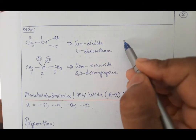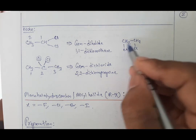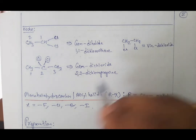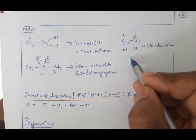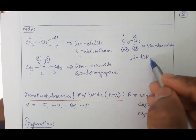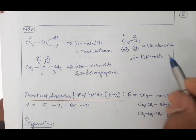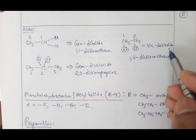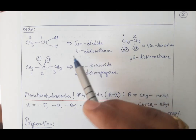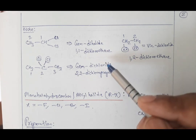For vicinal (weak) dichloride, the two halogens are on different carbons. For example, CH2Cl–CH2Cl: the two chlorines are on carbons 1 and 2 of a two-carbon chain. So in position 1, one chlorine is hanging, and in position 2, another chlorine is hanging — that gives 1,2-dichloro. With two carbons (eth-) and a single bond (-ane), the IUPAC name is 1,2-dichloroethane. This is one example of vicinal dichloride.